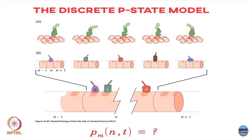You could ask: what is the probability to find the motor in the mth state at position n at time t? You could write down master equations for this probability. You can take into account the internal states of these motors by coupling the chemical cycle to the positions along the track and time, then write down evolution equations for these probabilities and solve them under certain approximations.